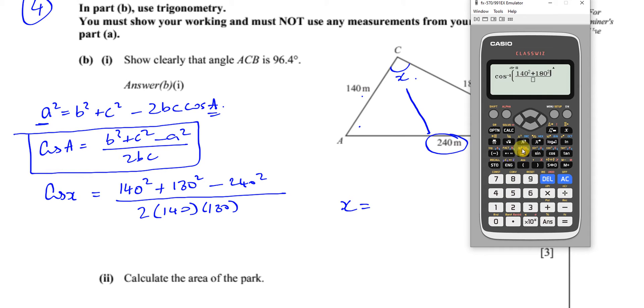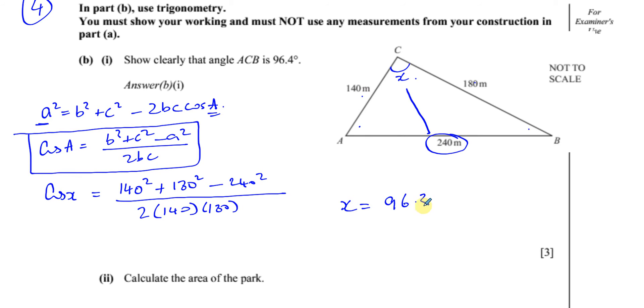And you can just put this all in your calculator. 140 squared plus 180 squared. Just make sure you don't do a mistake when you're pressing the buttons. Minus 240 squared divided by, and you've got 2 times 140 times 180. And you close that bracket, and that will give you your answer. And hopefully it will come out as something that gives you 96.4. Yes, 96.379.